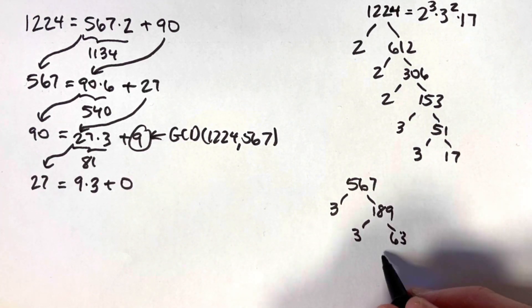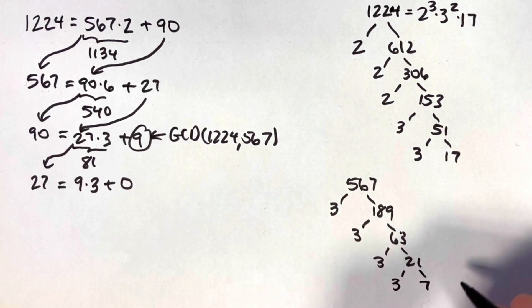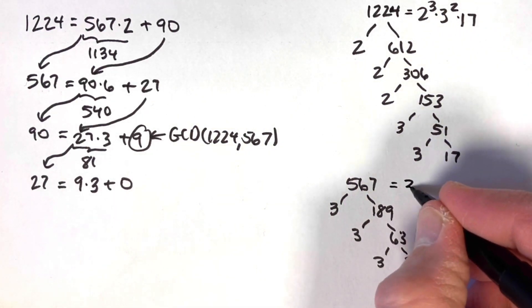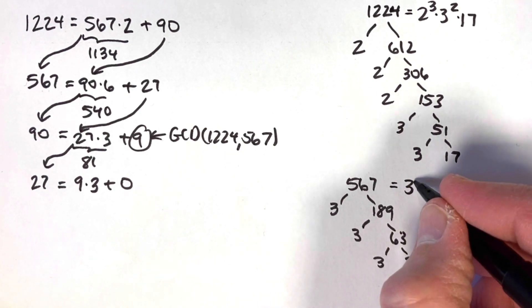63 is still divisible by 3. It's 3 times 21. 21 is divisible by 3. It's 3 times 7. Those are all prime numbers. The prime factorization of 567 is 3 to the fourth power times 7.